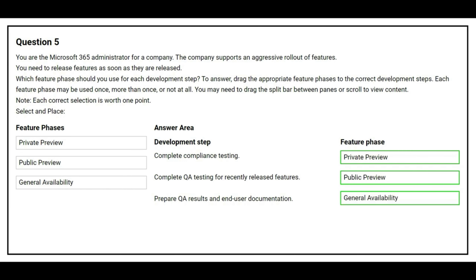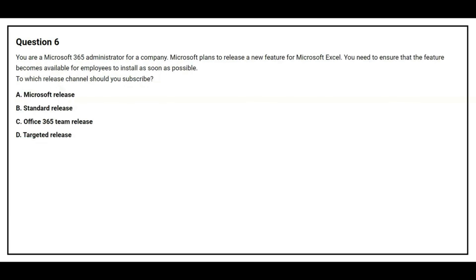Question number six: you are a Microsoft 365 administrator for a company. Microsoft plans to release a new feature for Microsoft Excel. You need to ensure that the feature becomes available for employees to install as soon as possible. To which release channel should you subscribe? Option A: Microsoft release. Option B: standard release. Option C: Office 365 team release. Option D: targeted release. The correct answer is Option D — targeted release.